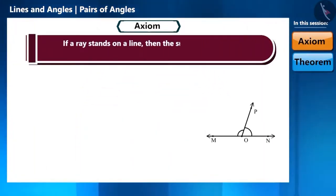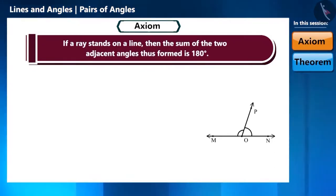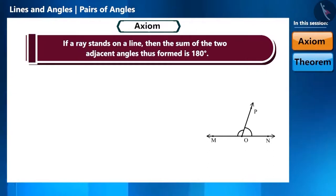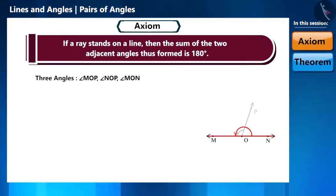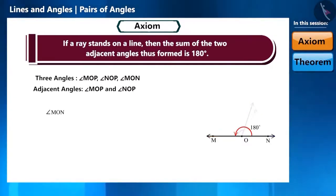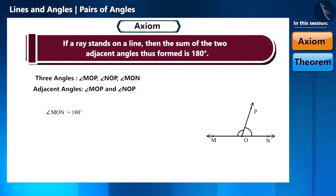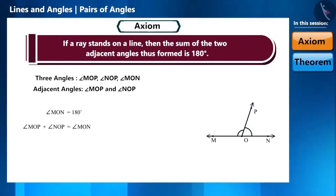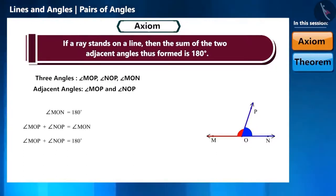If a ray stands on a line, then the sum of the two adjacent angles thus formed is 180 degrees. If you observe the figure, there are three angles here. The names of the three angles are angle MOP, angle NOP, and angle MON. Angle MOP and angle NOP are adjacent angles. The measure of angle MON is 180 degrees since MON is a straight line. We can say that angle MOP plus angle NOP is equal to angle MON, therefore equal to 180 degrees.